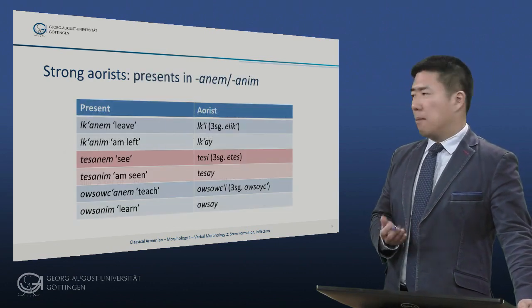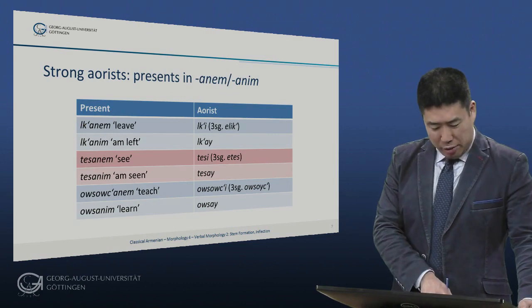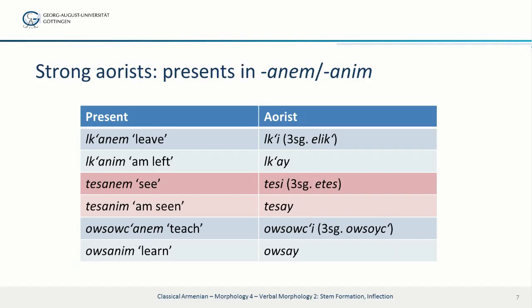This is the first and by far most common type: strong aorists beside presents in 'anem' or 'anim'. We have 'lkanem' (I leave) and aorist 'lki' (I left). The corresponding medial passive is 'lkanim' (I am left behind) and 'lkai' (I was left behind). Similarly, 'usutsanem' (I teach), aorist 'usutsi' (I taught), with the causative suffix — more on that in the next video. And 'usanim' (I learn), aorist 'usai' (I learned).